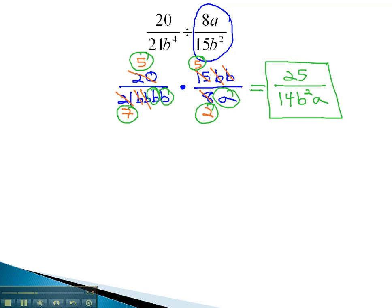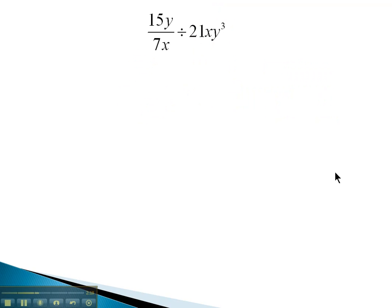Let's try one more example where we divide, multiplying by the reciprocal, and writing the exponents as a product. Here, we're taking the 15y over 7x and dividing it by 21xy cubed. One thing we might notice is that 21xy cubed is not a fraction. So, we'll make it a fraction by simply putting it over 1. Now, we're ready to multiply by the reciprocal.